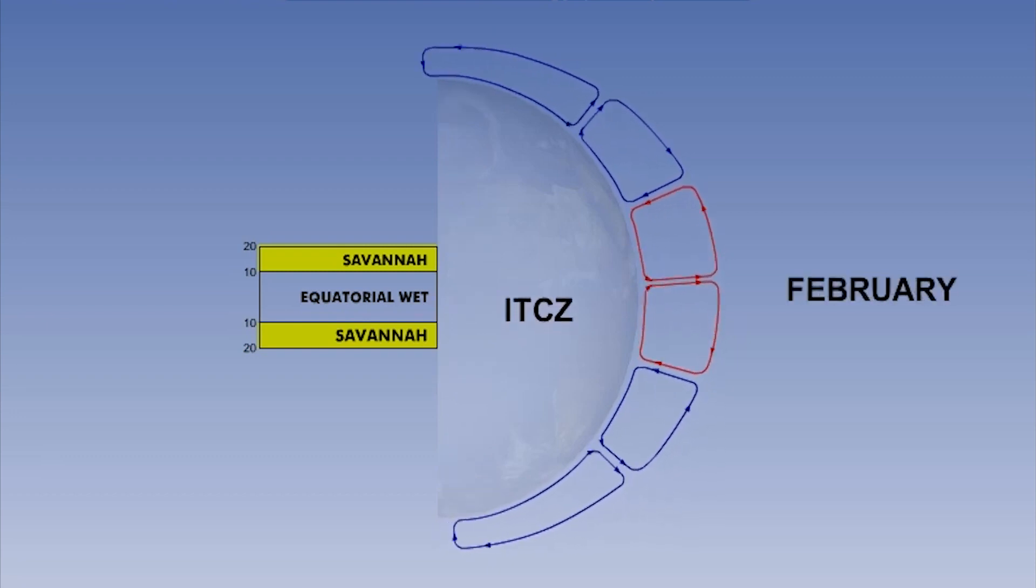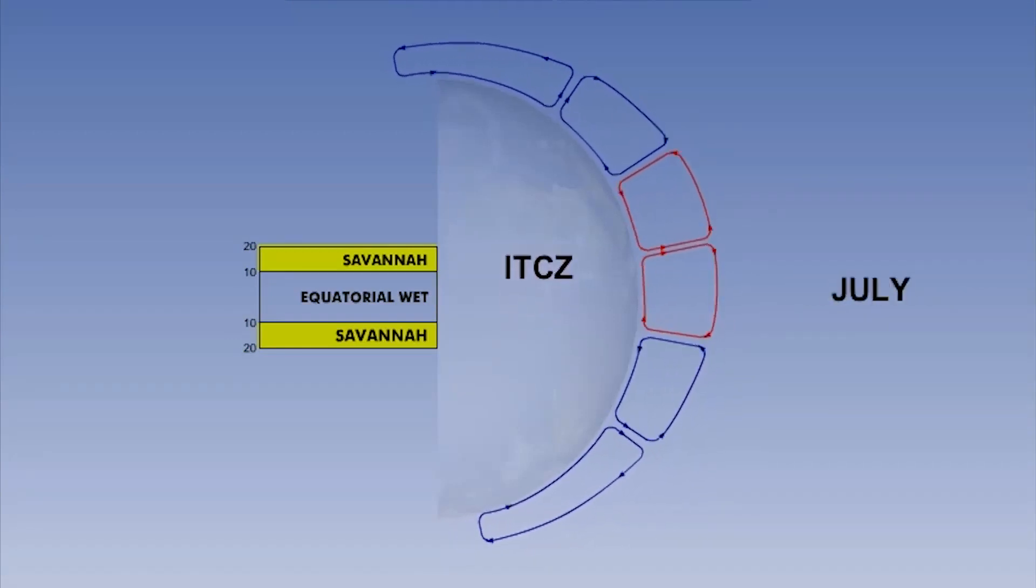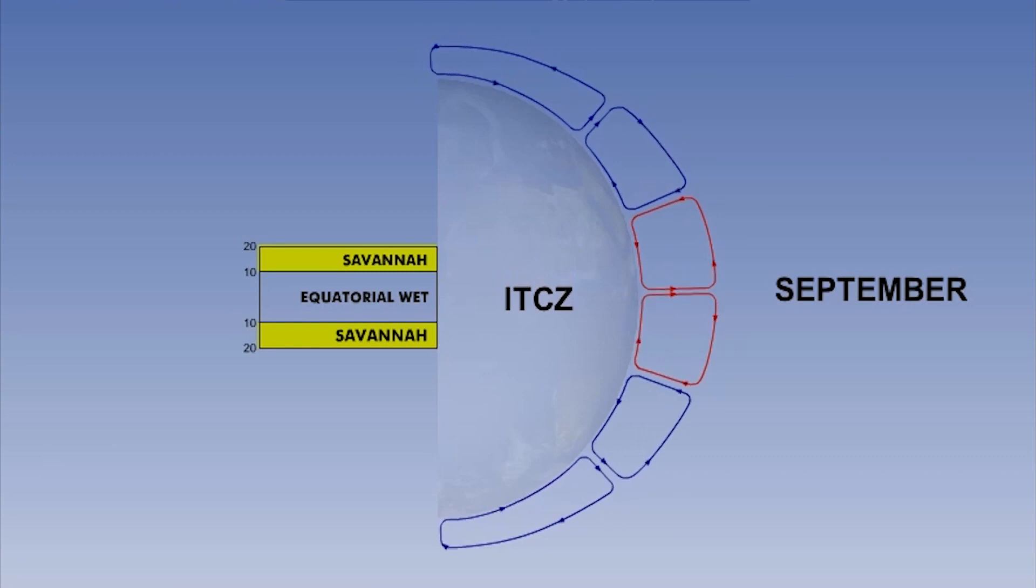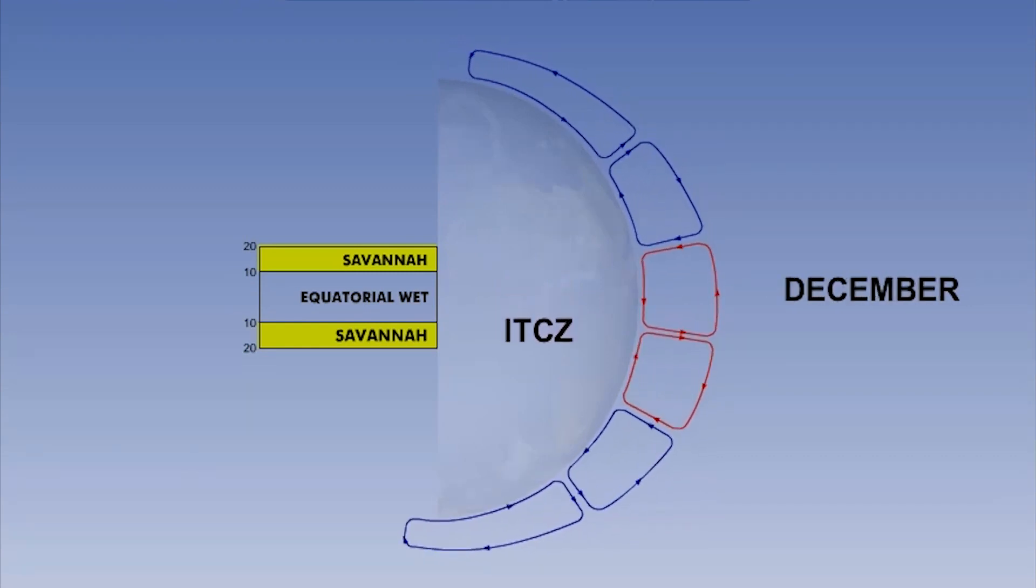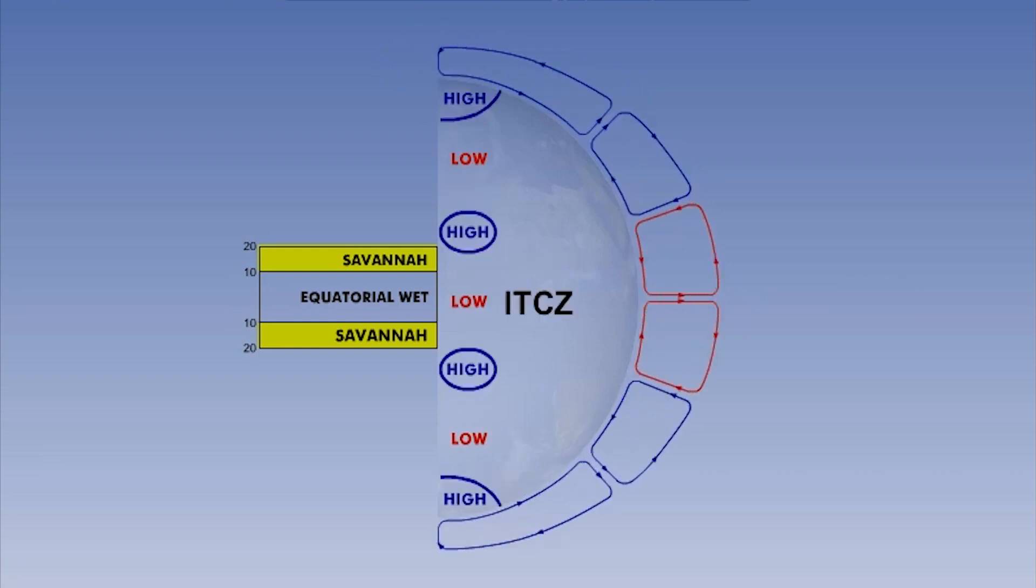Look at the savannah in the northern hemisphere, and notice when the ITCZ penetrates this zone. The animation will return to the June position to show the ITCZ overlying the zone. The rains will occur in summer, but only for a month or so. For the rest of the time, the dry trade wind from the subtropical highs dominates the weather.